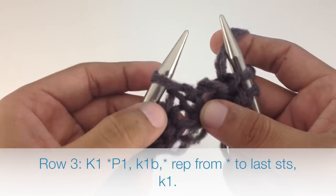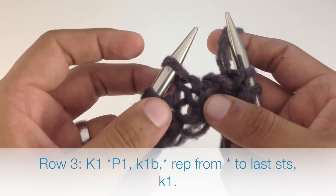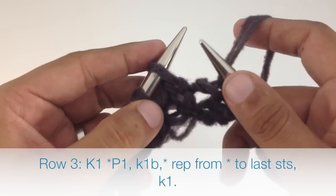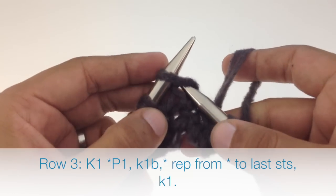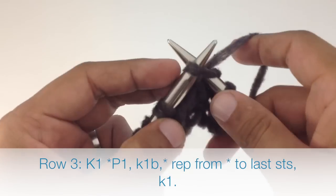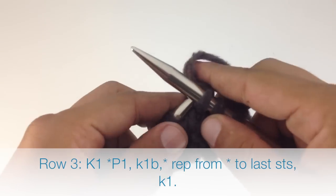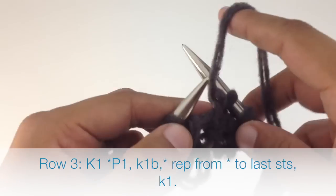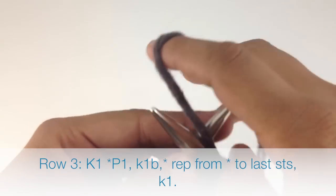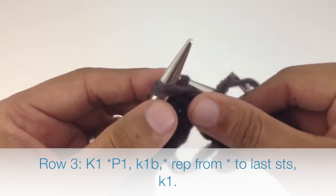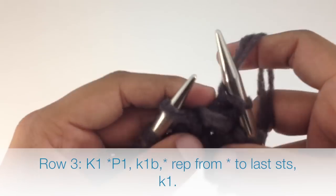Insert your needle into that stitch and knit it as normal, then drop the stitch off of your main needle. Continue purling one and knitting one below until you reach the last stitch in your row.